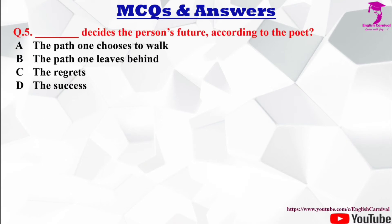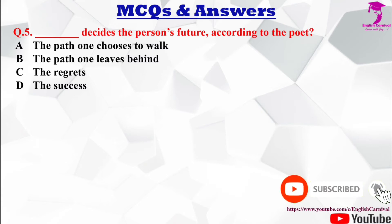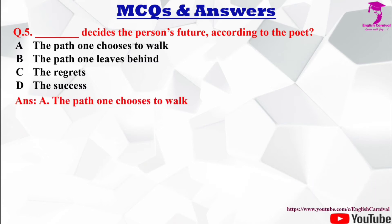Question number 5: ___ decides the person's future according to the poet Robert Frost. Options: A) the path one chooses to walk, B) the path one leaves behind, C) the regrets, D) the success. The correct answer is A — the path one chooses to walk.